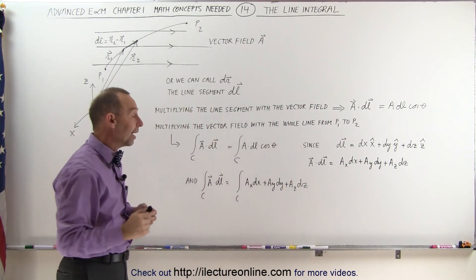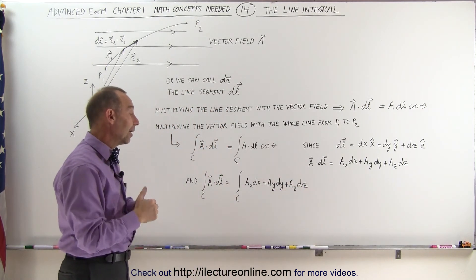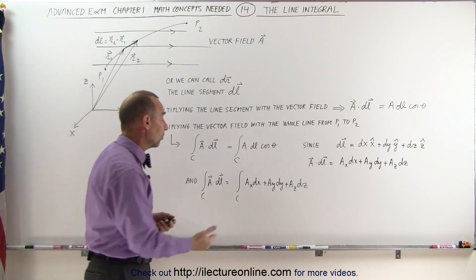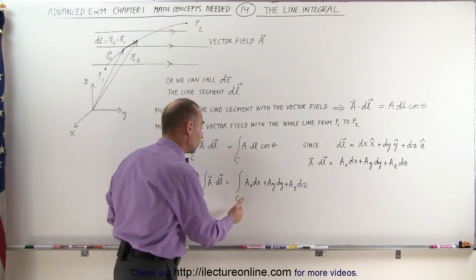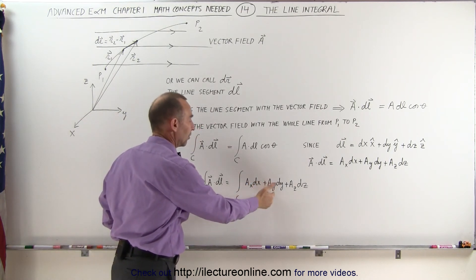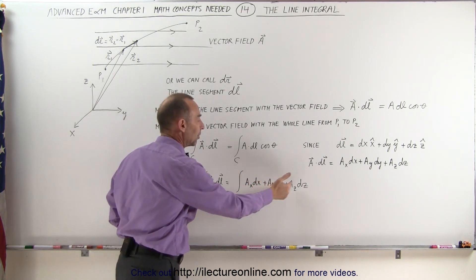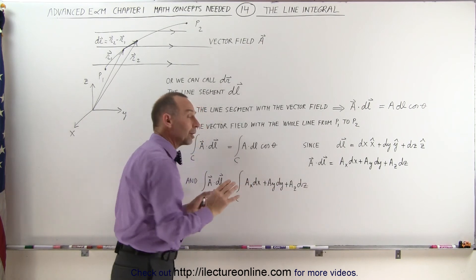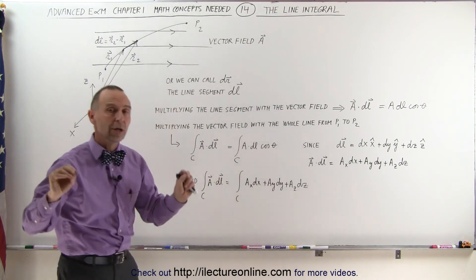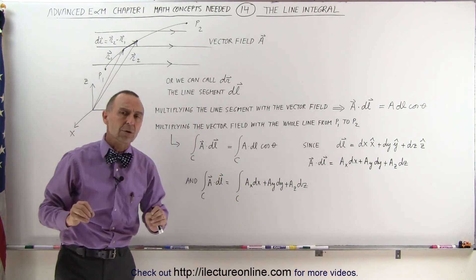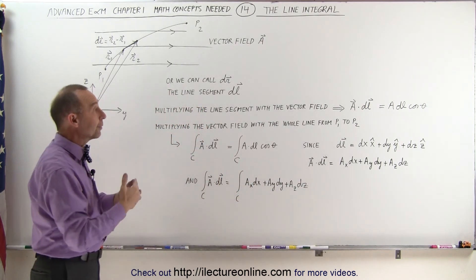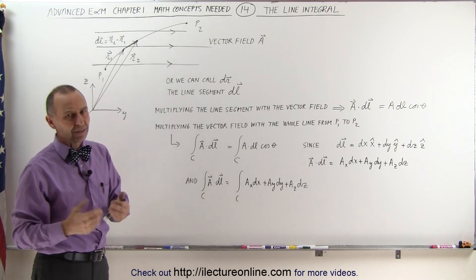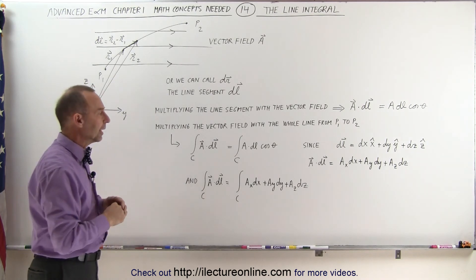Using the Cartesian coordinate system, we can express this as the integral of A_x dx plus A_y dy plus A_z dz. This is what we call the line integral — integrating a line across a vector field — and that's typically how we use it in electricity and magnetism.